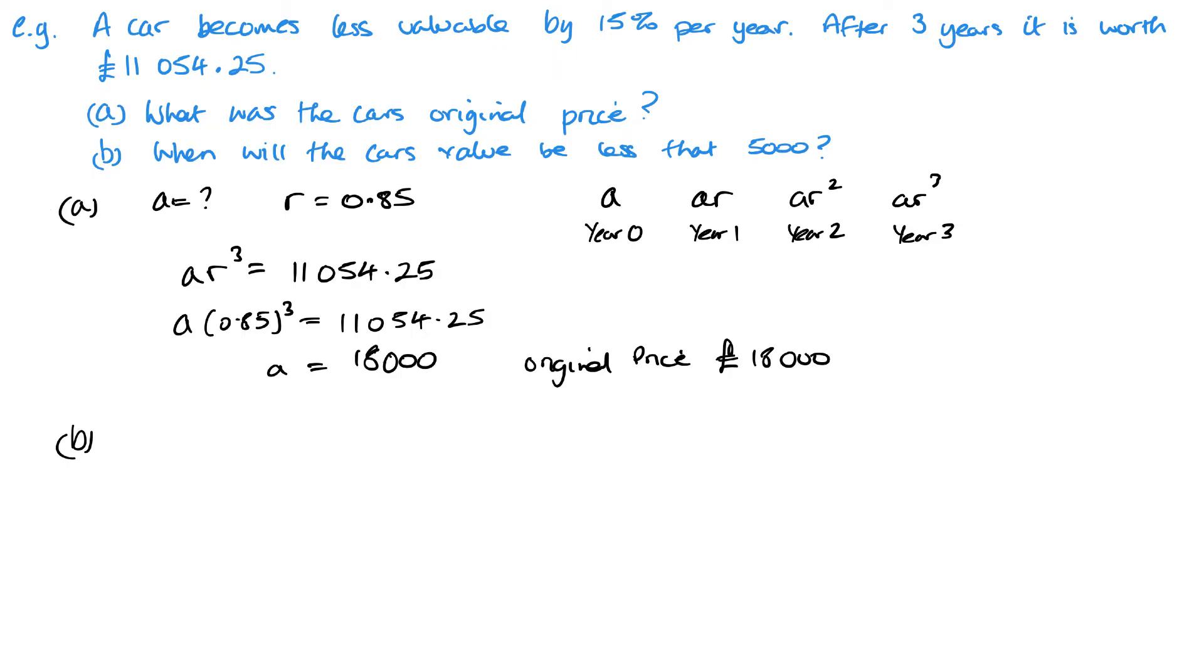And that was obviously part a. Part b: when will it be less than 5,000? So we want ar to the power n, and we want that to be less than 5,000. Remember I'm using n rather than n minus 1. I can use n minus 1, I just have to be a bit more careful with my years. So we know 18,000 is a and we know that r is 0.85.